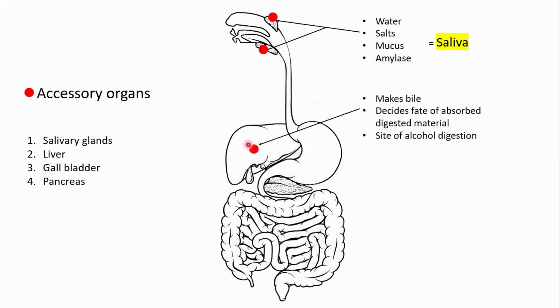Then we have the liver here. The liver is like the chemistry lab of the body and it also directs things where it needs to go. It tells it what it needs to do in terms of, okay, are we going to store this? Are we going to get rid of it? Are we going to convert something else? So the liver is where the fate of the absorbed digested material is decided.